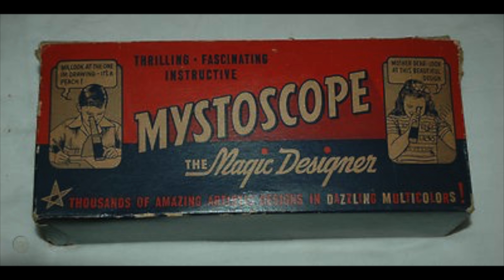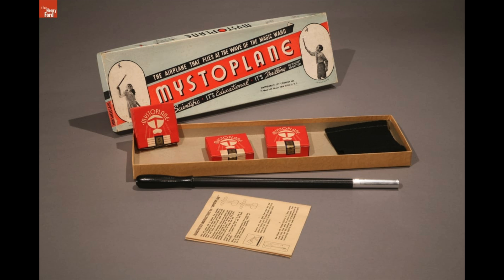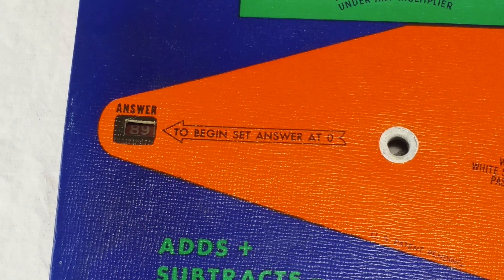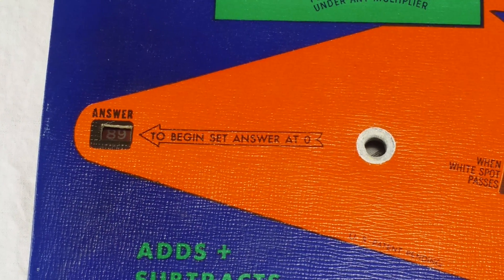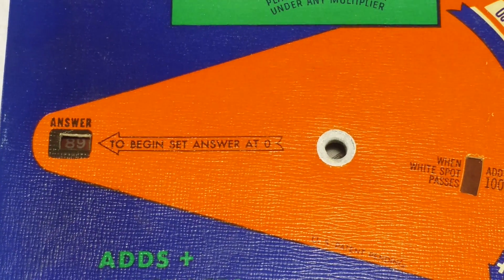They also made the Mistoscope. It's a kaleidoscope with a window cut in the sides so you can kind of see how it works. So you got the Mistoplane, then the Mistoscope, and then they decided to make some kind of adding machine. What are they going to call it? The Misto Math? Misto Calc? Misto Ad? Nope.